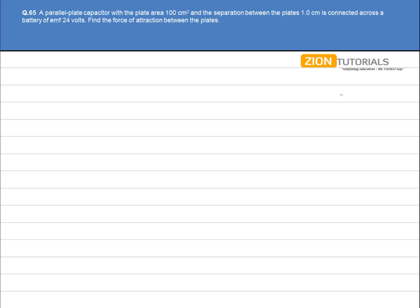A parallel plate capacitor with a plate area 100 cm² and a separation between the plates is 1 cm is connected across a battery of emf 24 volts. Find the force of attraction.